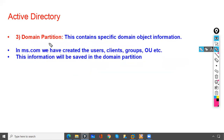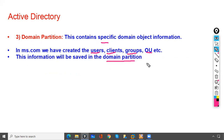The Domain Partition contains domain-specific object information. For example, in ms.com, users, clients, groups, and OUs that have been created — this information is saved in the Domain Partition.